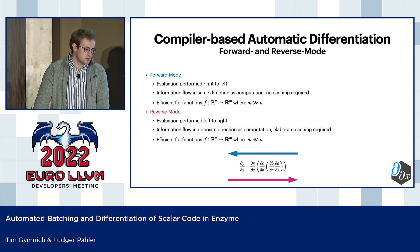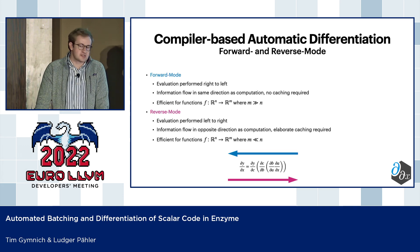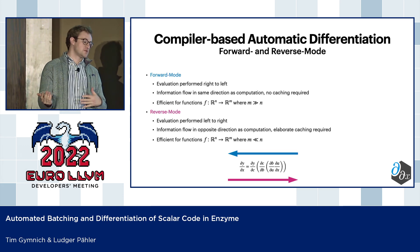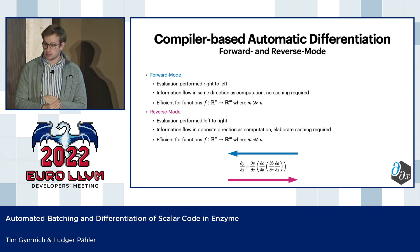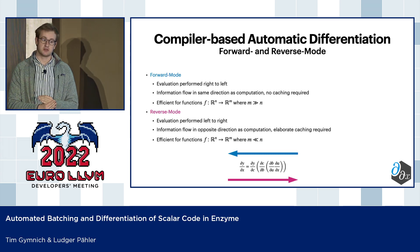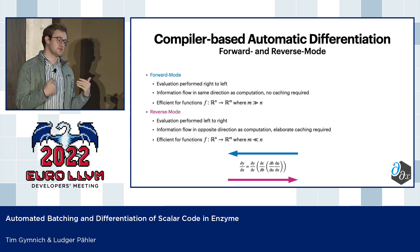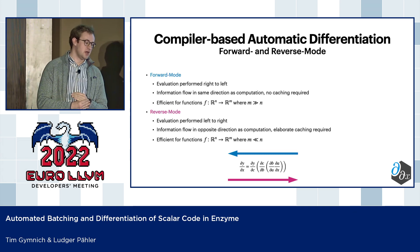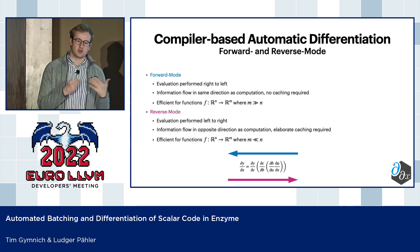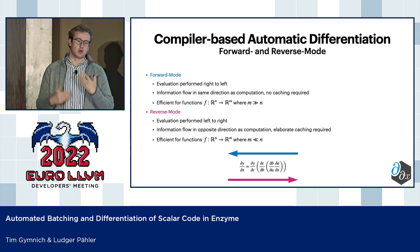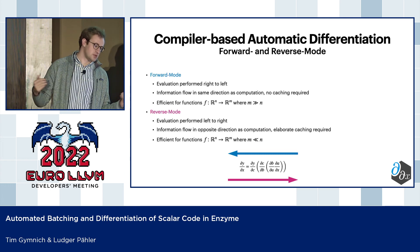What machine learning frameworks actually use is reverse mode, which flows in the opposite direction, so it requires you to cache values in between. It's best for many inputs to few outputs, like, for example, a loss function.